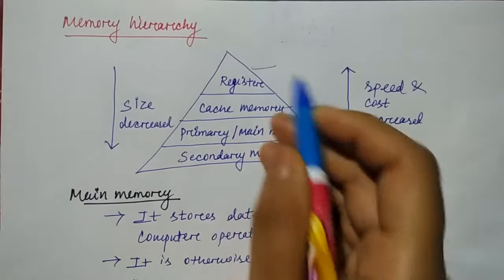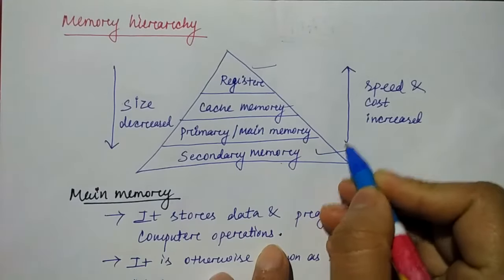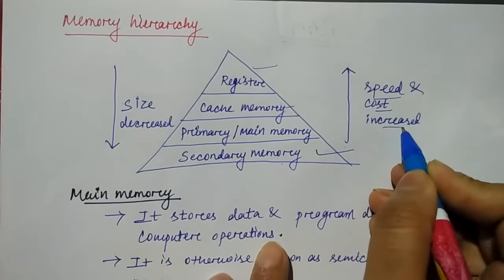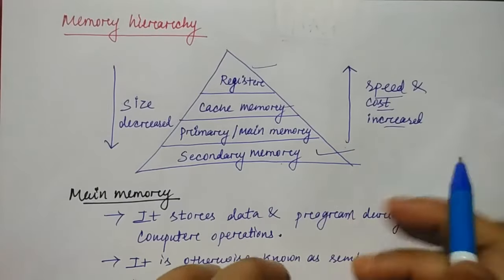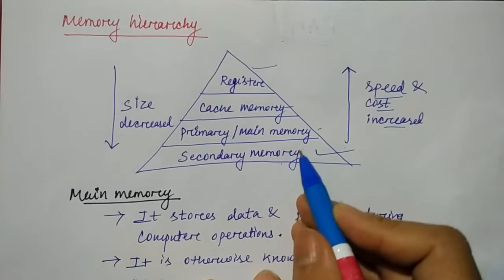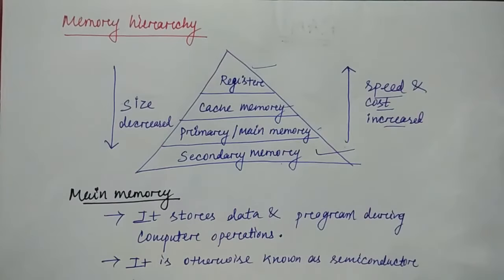Then cache memory and register. If you go from down to upward, your speed and cost will increase. Secondary memory costs less, but main memory price is higher than secondary memory. Cache costs more than main memory. The highest cost is the register.